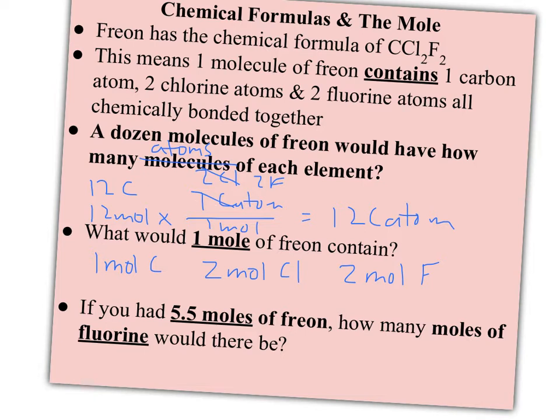So one Freon molecule has five atoms in it, and one mole of Freon has five moles of atoms in it. So if you had 5.5 moles of Freon, how many moles of fluorine would there be? Well, going back to my dimensional analysis, 5.5 moles of CCl2F2, I want moles of fluorine. I have moles of Freon, so I want to change what kind of moles I have. So I put the moles I want over the moles I have, and I know that there are two moles of fluorine in every one mole of Freon. So this would be 11 moles of fluorine.